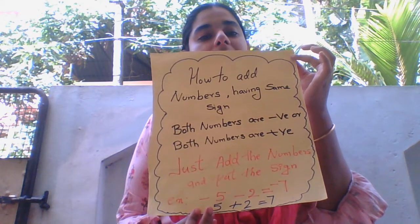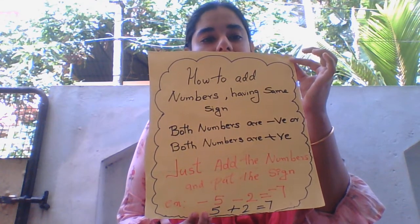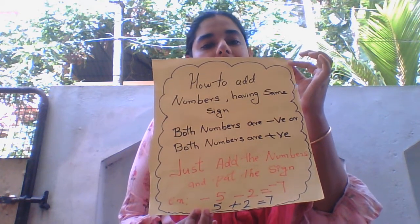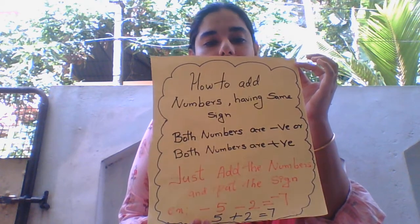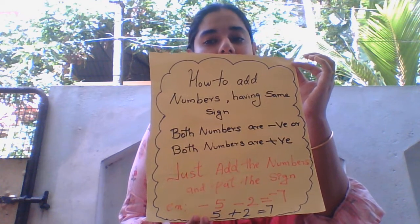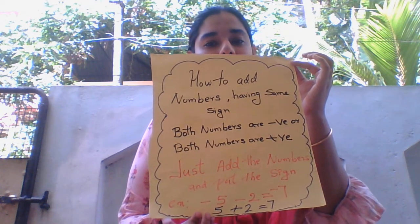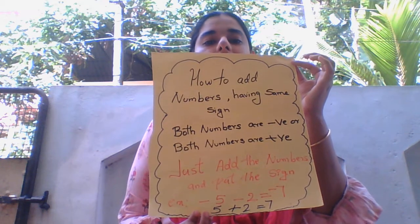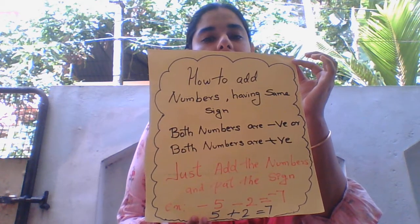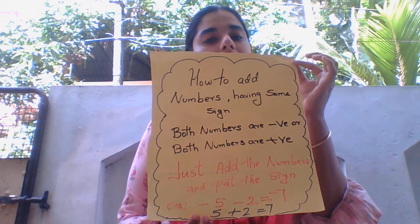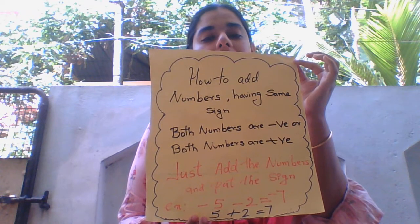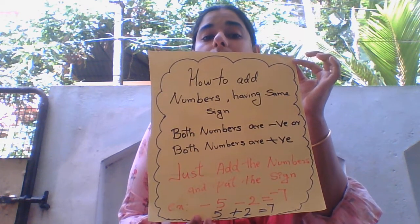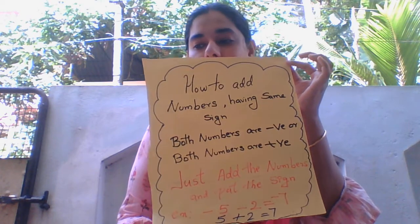Will you tell any two numbers? 2 and 10. Okay, 10 plus 2 — what? 12. And any two negative numbers? Minus 1 and minus 1. Okay, minus 1 and minus 1 — just add the numbers: 1 plus 1 gives 2, put the negative sign — negative 2 is the answer. So you understand how to add numbers of the same sign.